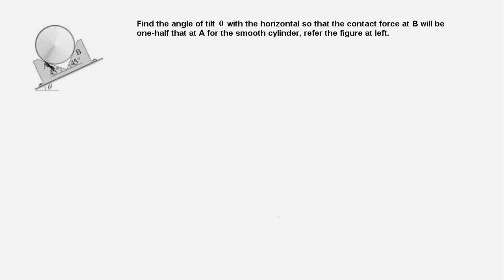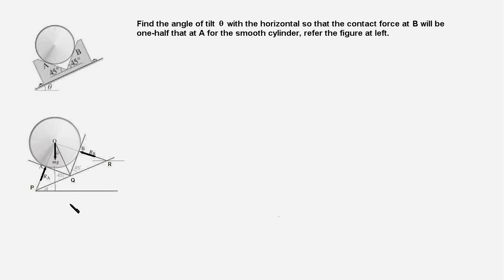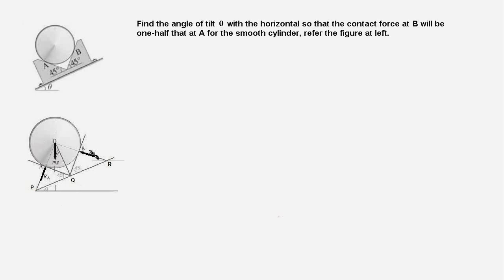The first step is to draw a free body diagram of the cylinder. Here is the free body diagram showing the three forces acting on it. The reaction force at B is normal to the channel surface and passes through the center of the cylinder O. Similarly, the reaction force at A is normal to its surface and points towards the center O. The weight Mg acts downwards. The first task is to determine the angles these two reaction forces make with the horizontal.